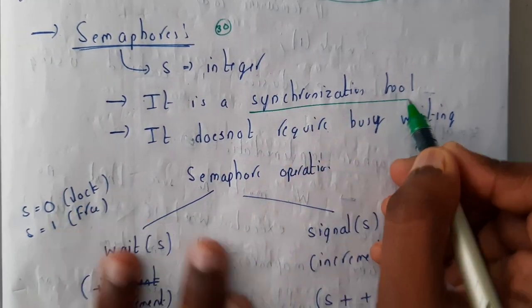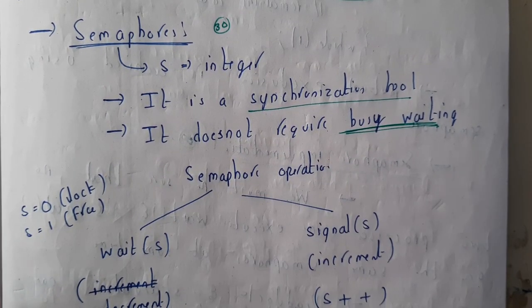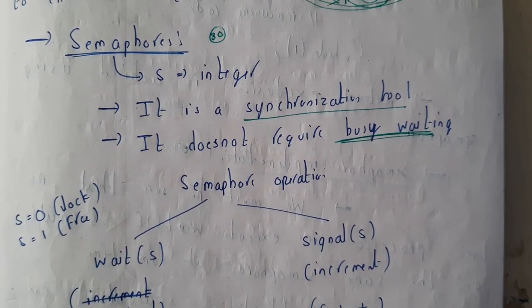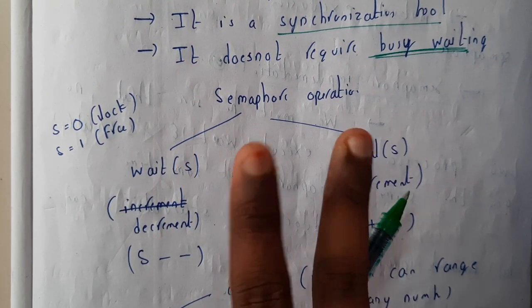That is the reason why it is called a synchronization tool. It does not require busy waiting because it gives you exact values and exact timing. Basically, semaphores are of two types.